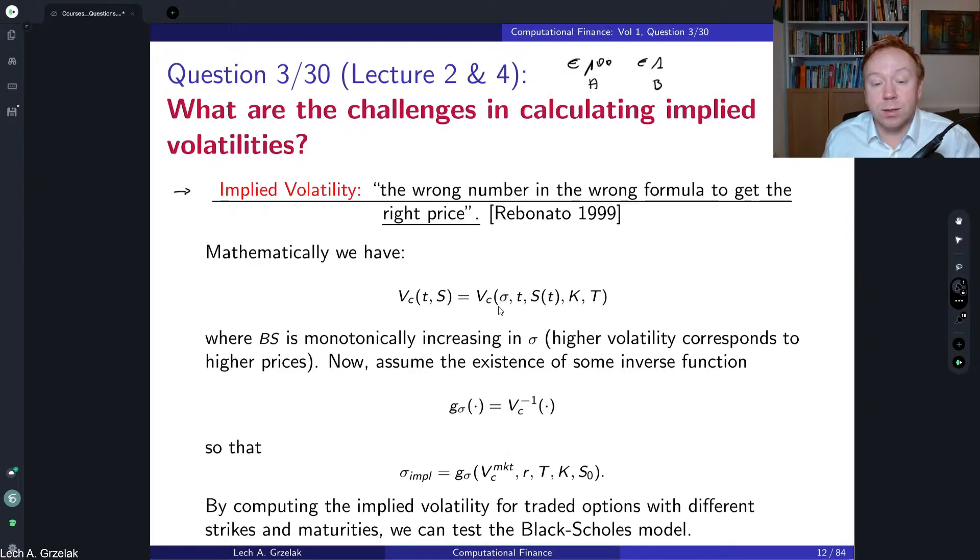So of course now what we have to do, we have to invert this formula because we want to find a sigma. So we assume some existence of the function g, sigma, and we want to invert this. And here of course we would plug in the option price that we see in the market. So sigma implied is g, and then we have an option price from the market and the rest of the parameters. You can call those are actually the market specific, those are the settings. So interest rate, time to expiry, strike, and S zero. Those are information known in the market.